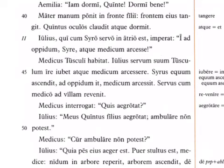Syrus equum ascendit — Sirus climbs on the horse. Ad oppidum it — goes to the town. Medicum arcessit — fetches the doctor. Servus cum medico ad villam redit — the slave returns with the doctor to the villa, their fancy estate home in the countryside.